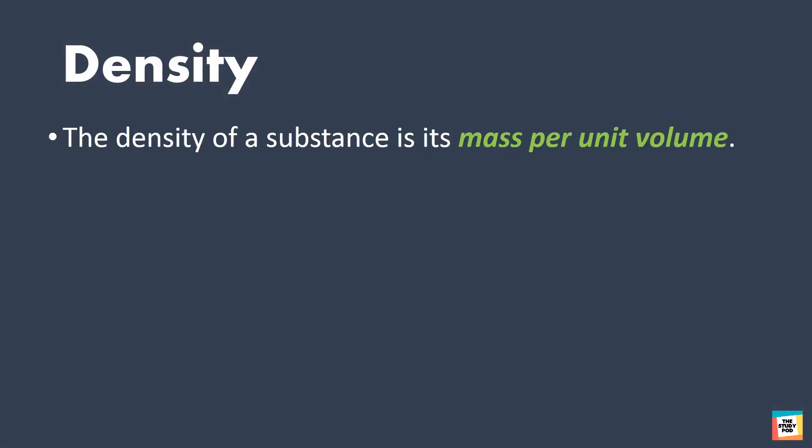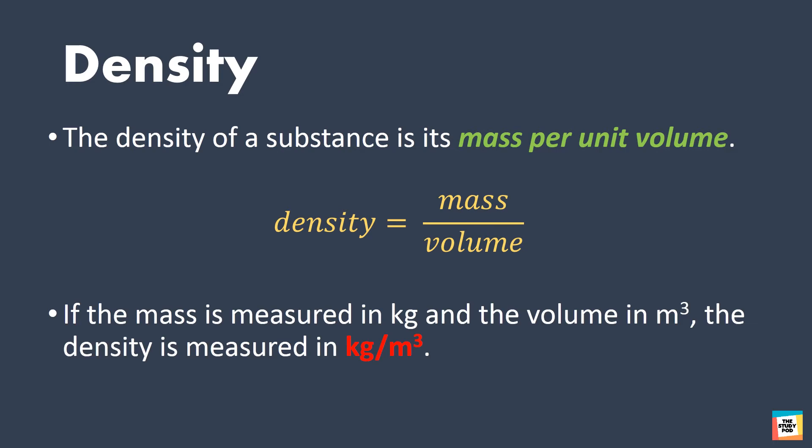The density of a substance is its mass per unit volume. Mathematically, density equals mass divided by volume. If the mass is measured in kg and the volume is measured in cubic meters, then density is measured in kg per cubic meter.